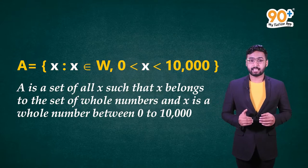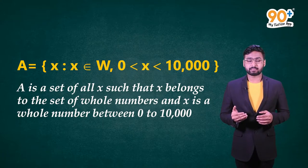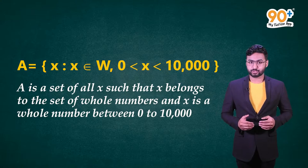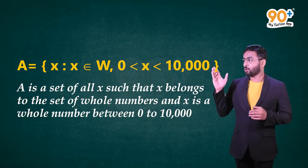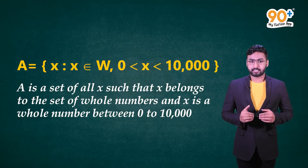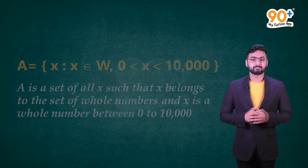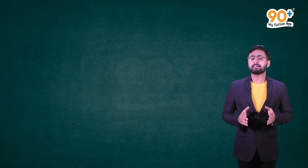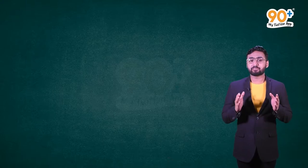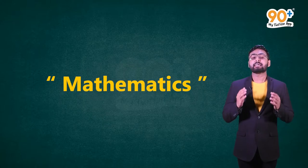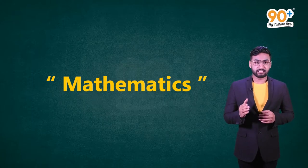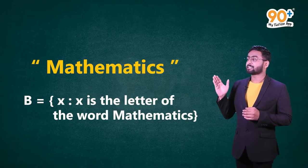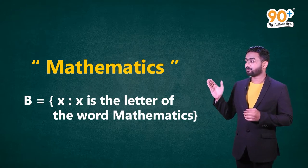Here, x describes the element of the set. Any other small letter like y, z, etc. can also be used. This is followed by a colon and then the characteristic property possessed by the elements is stated. Can we write the set of all letters in the word 'mathematics' in set builder form? Yes. Let's name that set B. B = {x : x is a letter of the word mathematics}. This is how we represent a set in set builder form.